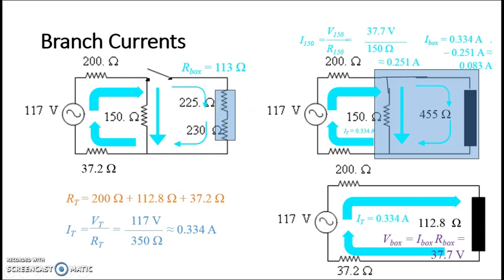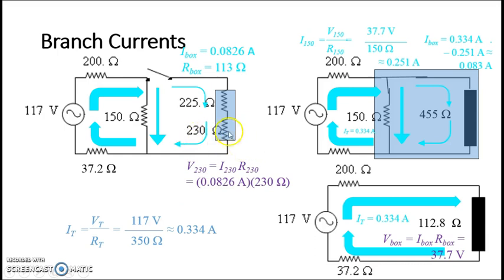Well, I suppose that's a little bit harsh. We know the current going into the 225. Look, it's 0.0826 amps. We know the current coming out of the 230. Look, it's the same 0.0826 amps. And if we know the current and we know the resistance of each one, we can find the voltage drops. The voltage drop here is the current times the resistance. Find it, see if it makes sense.